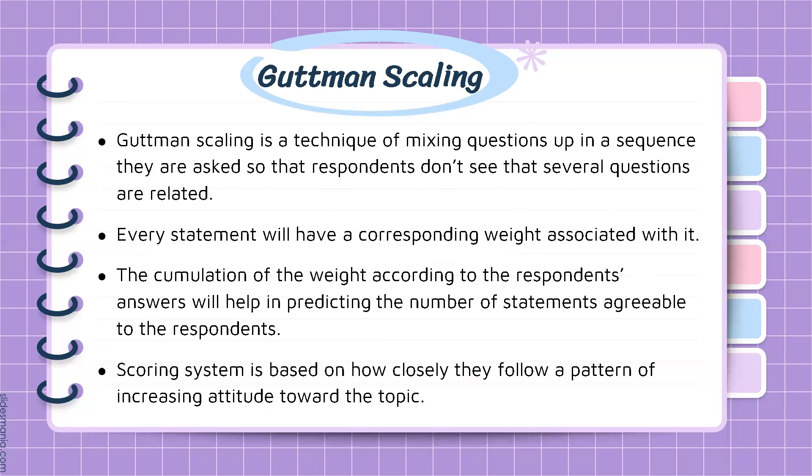Guttman's scaling is the technique of mixing questions up in a sequence they are asked, so that respondents don't see that several questions are related. Every statement will have a corresponding weight associated with it. The accumulation of the weight according to the respondents' answers will help in predicting the number of statements agreeable to the respondents. The scoring system is based on how closely they follow a pattern of increasing attitude towards the topic.